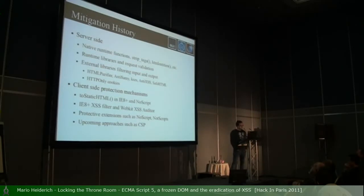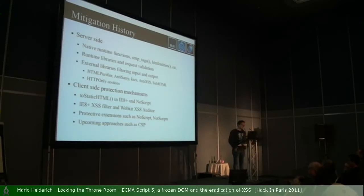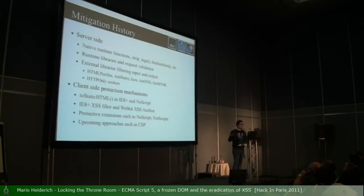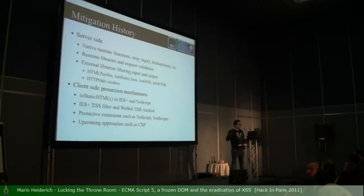We have the WebKit XSS auditor, meanwhile deployed in Chrome — if you have a reflected XSS attack, Chrome is likely to notice it and block it, but it's again bypassed. And we have upcoming approaches such as CSP — the Content Security Policy — which allows a developer to specify via headers what kind of resources a website is allowed to use: shall there be eval, function constructors, external scripts, and from which domains? This is quite interesting and definitely worth a look, but again already broken in several ways.